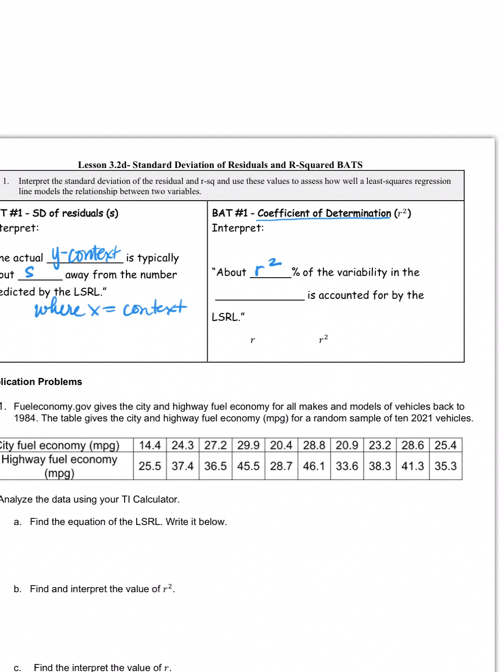And we say about, for instance, 93% of the variability in the context, for instance the IQ, is accounted for by the regression line. Again, I would say 'where x is equal to whatever the context is.'